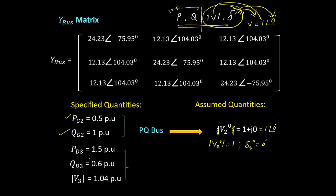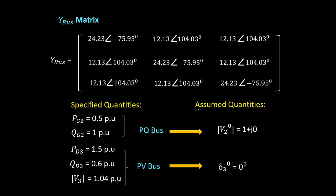The third bus is a PV bus. For a PV bus, you know real power and voltage magnitude; the unknowns are reactive power and the phase angle δ. The reactive power must be calculated — you cannot assume it. The angle δ3 can be assumed as 0°. We take assumed quantities only for voltage magnitude and phase angle depending on the bus type. These are the basic steps followed for any type of load flow.